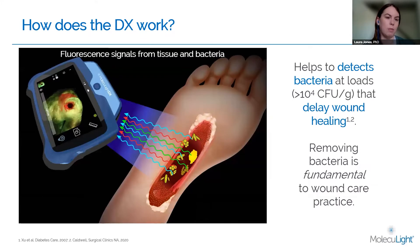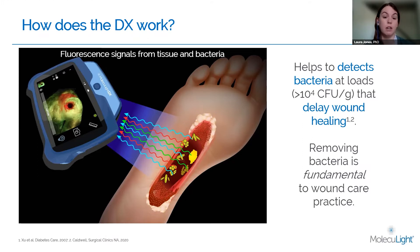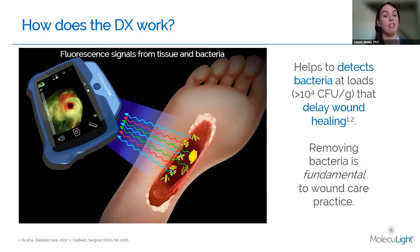The really unique part of the Moleculite is the fluorescence imaging capability. In a darkened room, you'll use the device to shine a safe violet light onto the wound, and different components will fluoresce different colors. Skin components, slough, anything that's collagen-rich will fluoresce green, while the vast majority of bacteria will fluoresce in the red fluorescence range, indicating elevated bacterial loads. Cyan fluorescence indicates the presence and location of Pseudomonas aeruginosa specifically, so in real time we can identify that specific bacterial species.